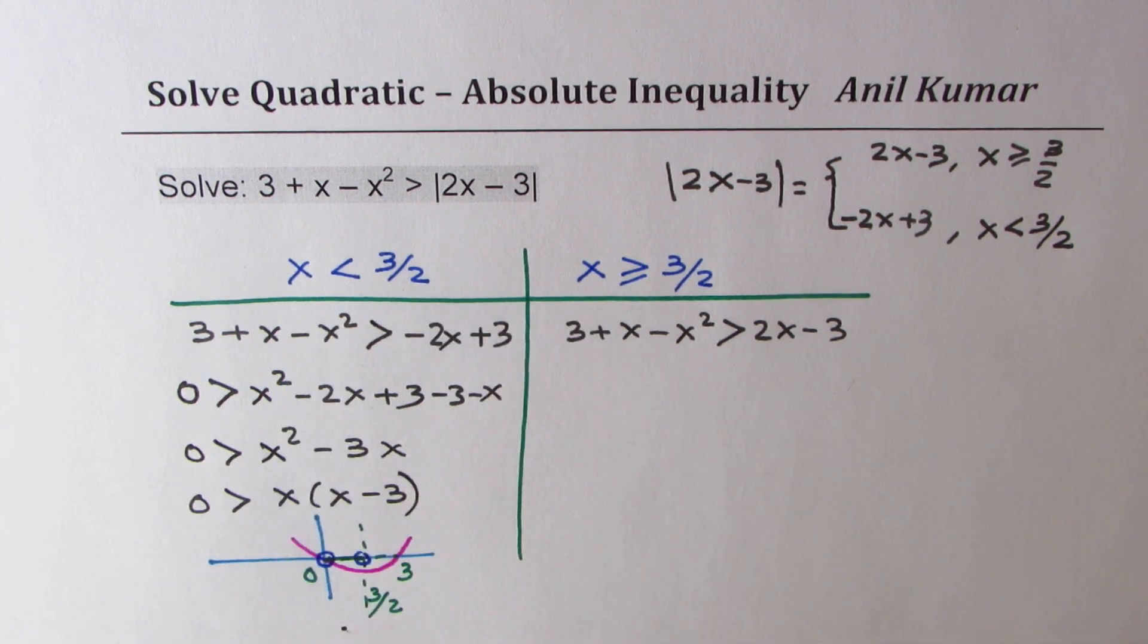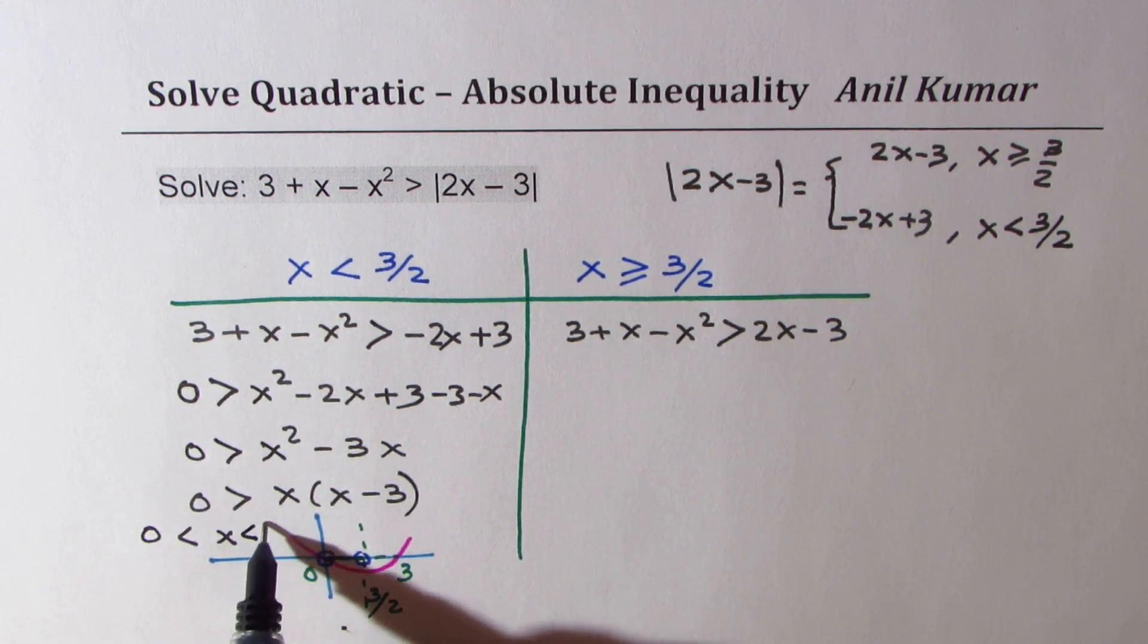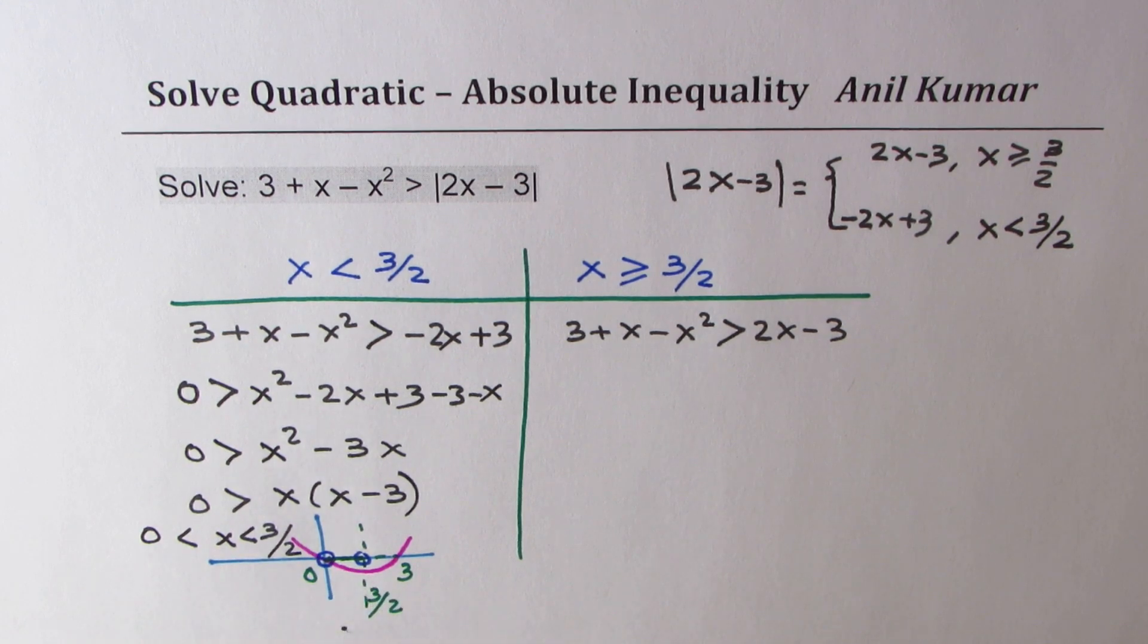That is common between these two, perfect? So here, the solution is that x is greater than 0 and is less than 3 by 2. So I hope this part is clear.